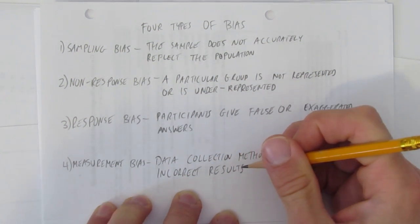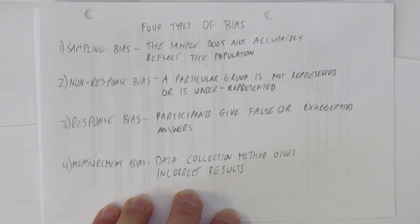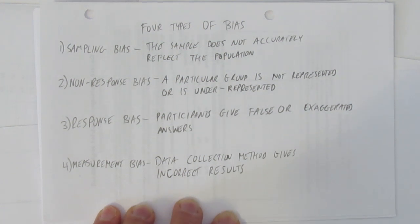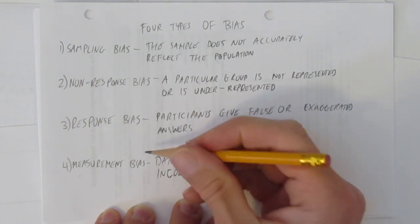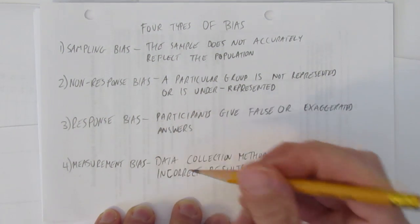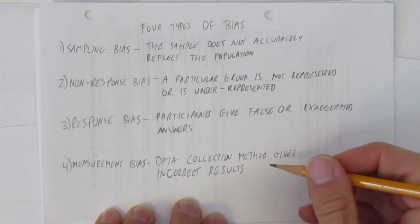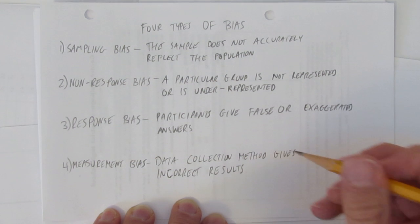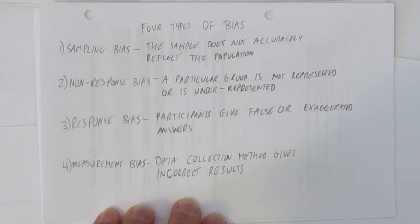For example, when you ask a survey question and something about your question is leading, misleading, or tends to suggest one answer is better than the other. When your survey, the way you ask your questions, and how they're worded isn't unbiased or doesn't give fair and equal chance to all choices, you end up with measurement bias.